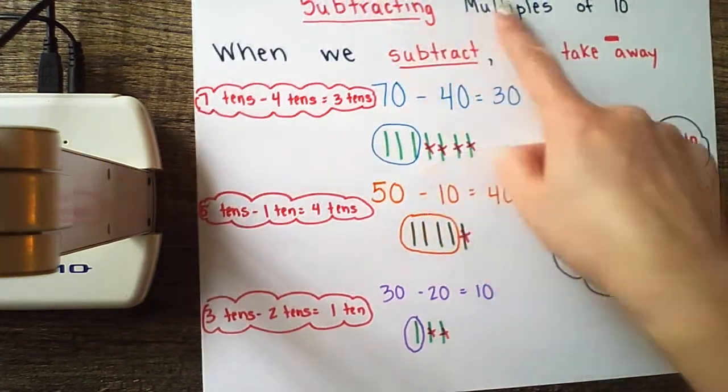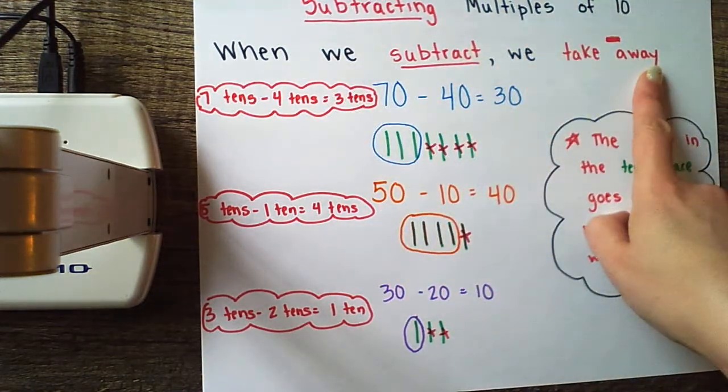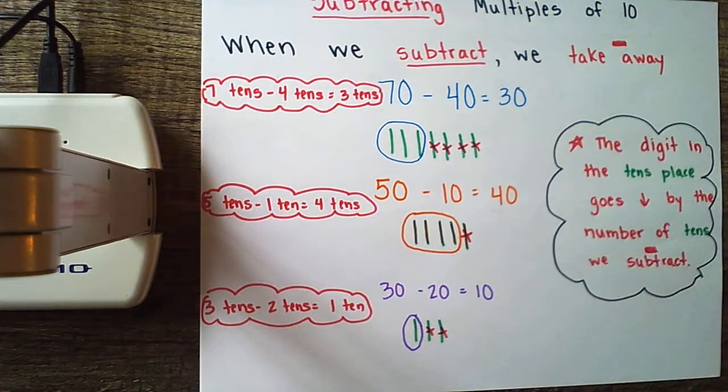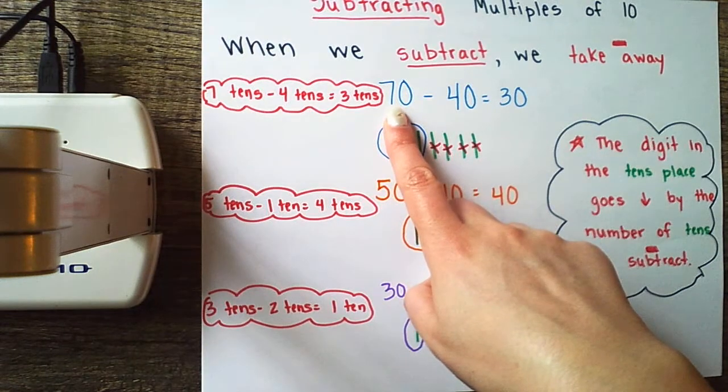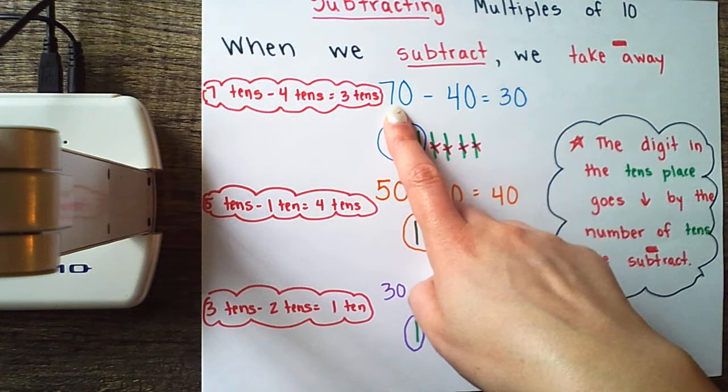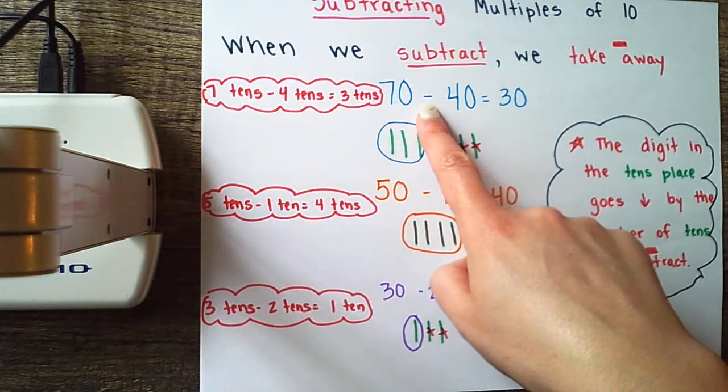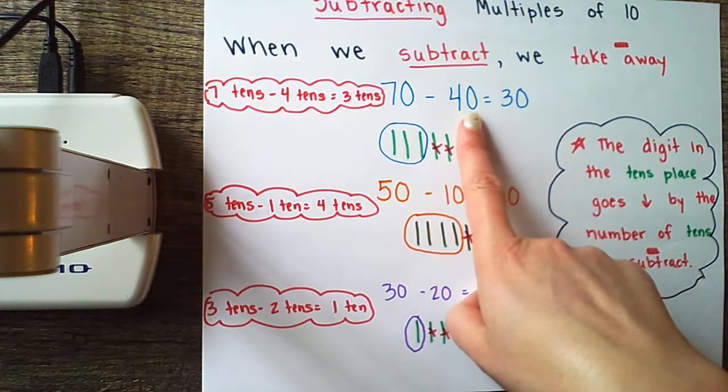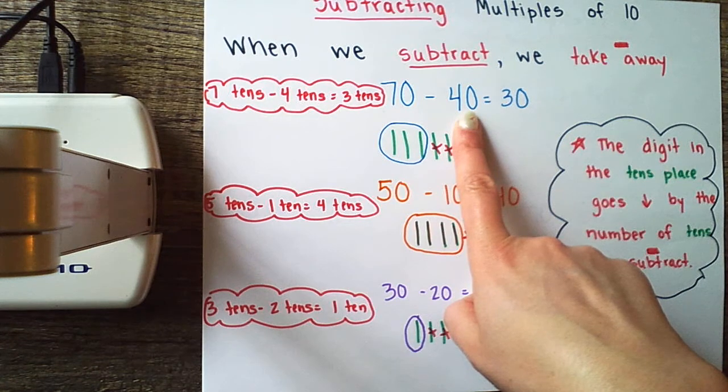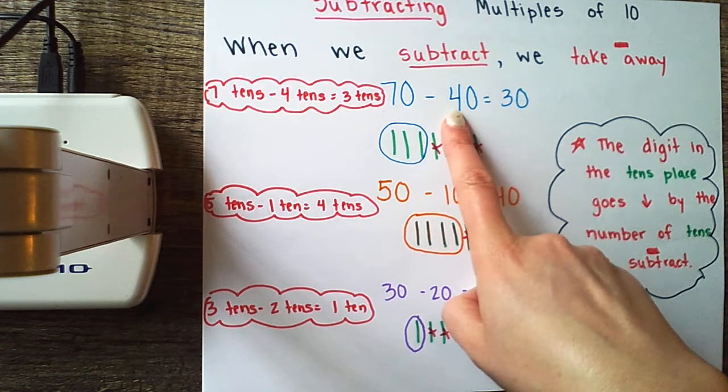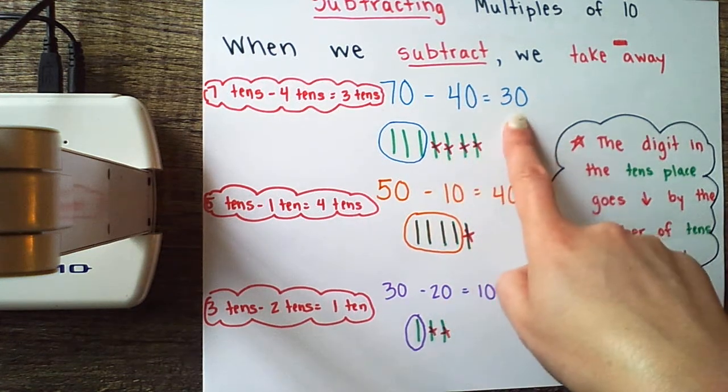When we're subtracting multiples of 10, we take away. Let's take a look at some examples. If we're looking at 70, 70 is a multiple of 10 made up of seven 10s. We subtract or take away 40. 40 is another multiple of 10 - instead of having one 10 we have four 10s. We end up with 30.